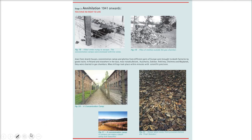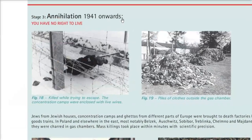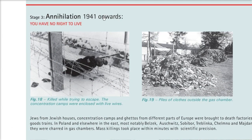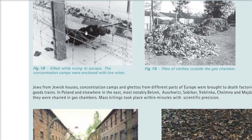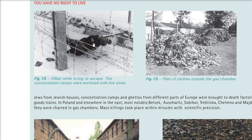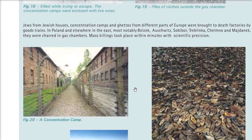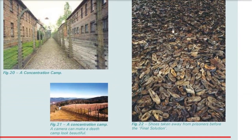Step three was annihilation, from 1941 onwards. One person is shown being killed while trying to escape. Concentration camps were enclosed with electrified live wires. Piles of clothes were found outside the gas chambers because all who wore them had been killed. These are the shoes of prisoners — mostly Jews — collected for the 'final solution.'